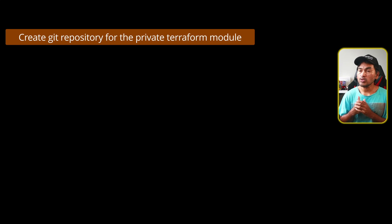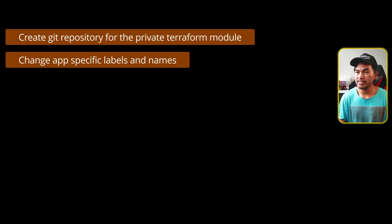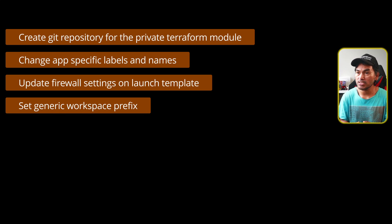Before doing the actual work, let me list down the things that I need to achieve today. I need to create a Git repository for the reusable module for autoscaling group resources. I need to update the names and labels from being too specific to generic. I need to update the firewall settings inside my resources attached to my launch template, and also make sure that my workspace prefix is generic enough.